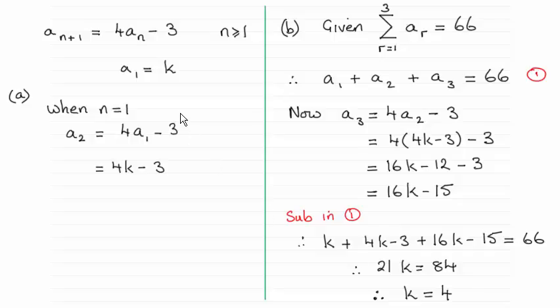With the first one, you can see that to get a2 all I need to do is set n equal to 1 here. So a2 would be equal to 4 times a1 minus 3. And then we just substitute what a1 is, it's k in here. So you get a2 equals 4k minus 3.